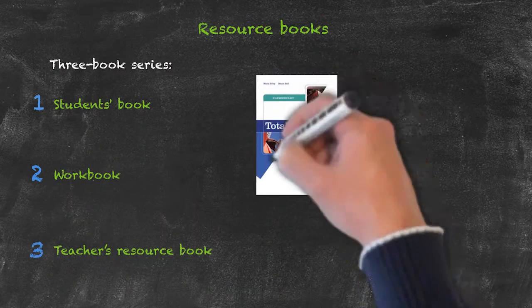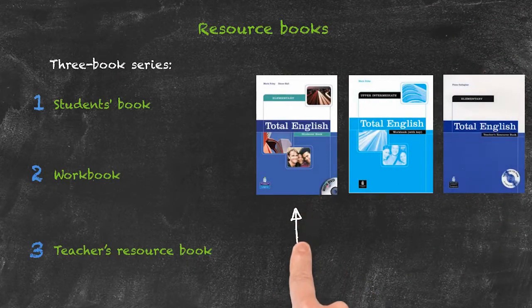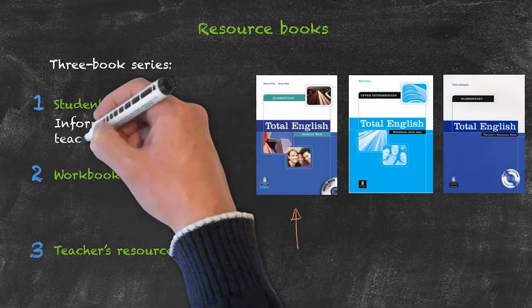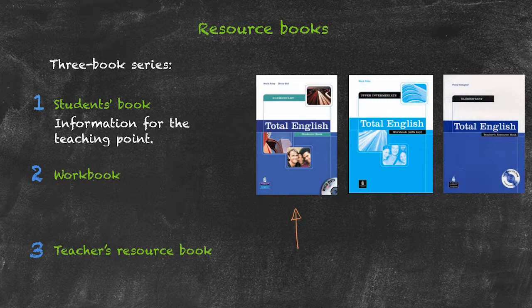Here are those three books for this particular series called Total English. In the student book, the type of information we can gain includes the actual background to the teaching points themselves, plus some additional information in terms of short worksheets and so on. There are also tape transcripts at the end for listening activities, which these days often come on a CD rather than a cassette. So the student book gives us the actual information for the teaching point.